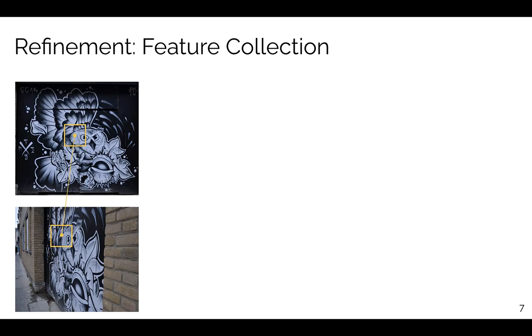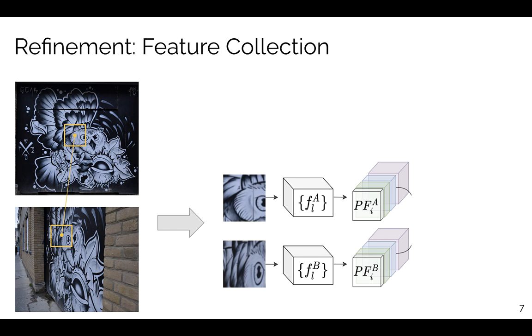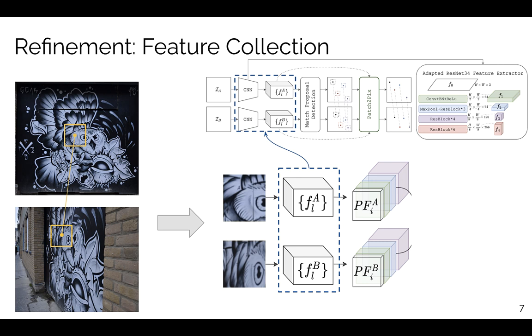Now let's have a look at the details of the refinement procedure. Given a detected match proposal, we first locate the two patches centered by the correspondent points. Then we collect multi-level features for the two patches using the CNN features extracted at detection stage, and the two patch features are fused by concatenation.